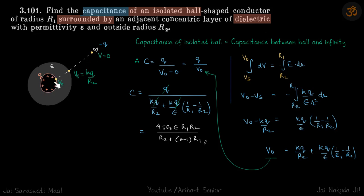In this case, the potential of the ball is V0 and the potential at infinity is 0, then the capacitance of this ball is Q by V0-0, which is Q by V0. So capacitance of isolated ball is equal to capacitance between ball and infinity.